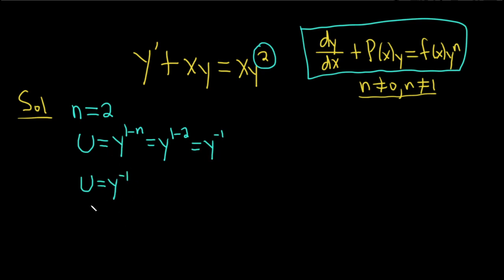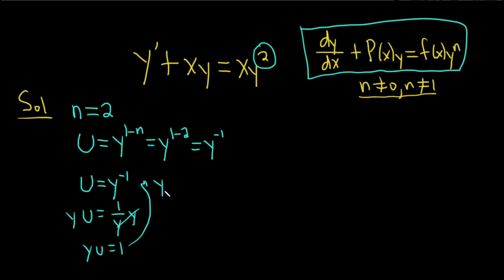Now we solve for y. We have u equals 1 over y. We can multiply both sides by y to get yu equals 1, then divide by u to get y equals 1 over u. It seems like a lot of work, but you can do it in fewer steps — I'm just showing extra steps here.